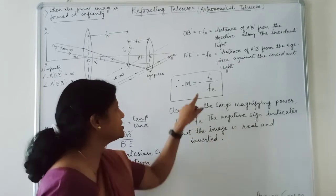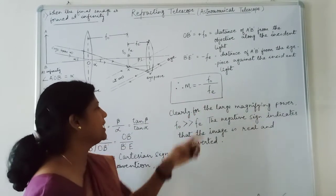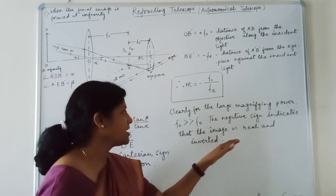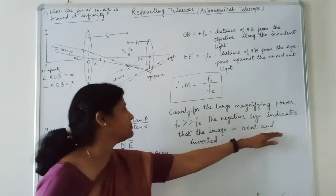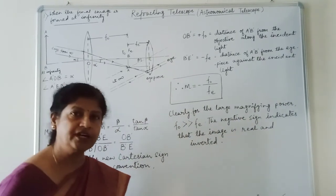The negative sign indicates that the image is real and inverted. Final image is real and inverted.